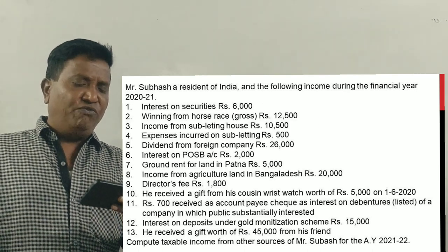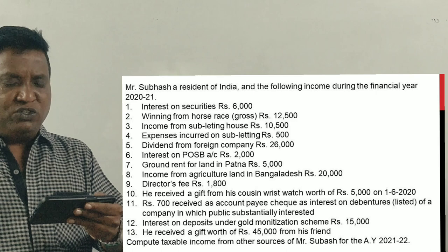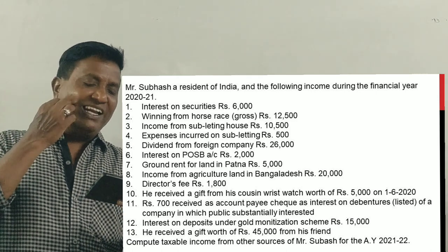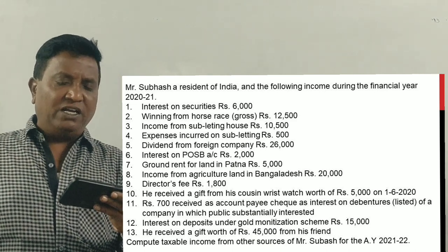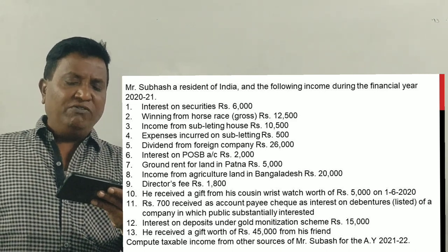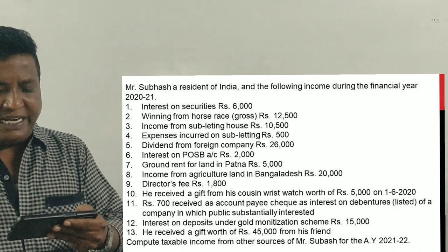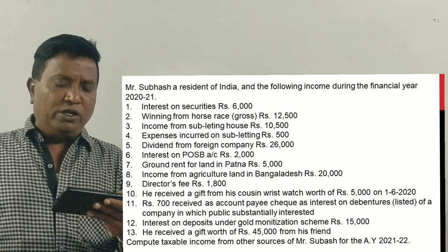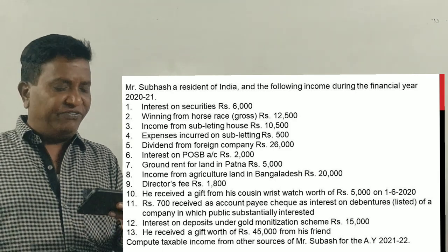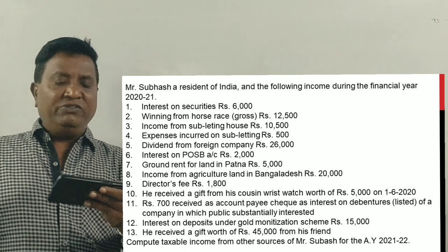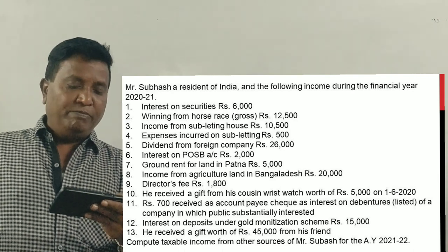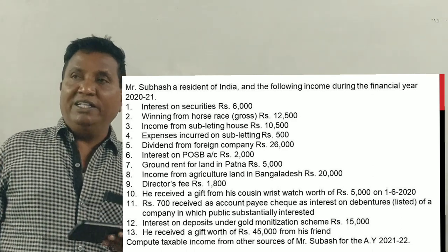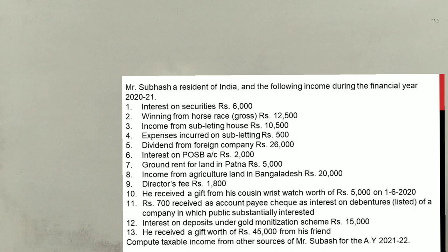Income from agriculture land in Bangladesh Rs. 20,000. Director's fee Rs. 1,800. He received a gift from his cousin wristwatch worth Rs. 5,000 on 1-6-2020. Rupees 700 received as account payee cheque as interest on debentures of a company in which public is substantially interested. Interest on deposits under gold monetization scheme 2015, Rs. 15,000. He received a gift worth Rs. 45,000 from his friend. Compute taxable income from other sources of Mr. Subhash for the assessment year 2021-2022.